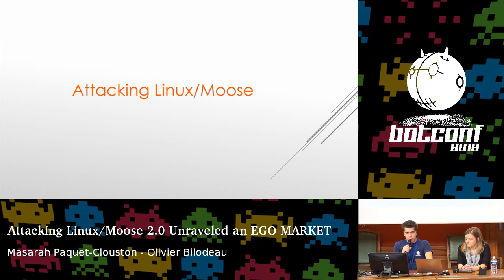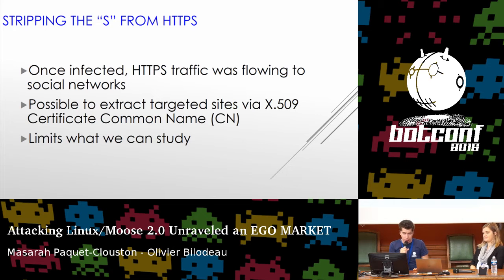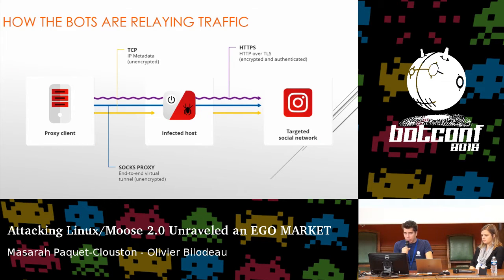Attacking Linux Moose: we wanted to look at the traffic beyond just certificate names, because the CN limited what we could study. At first we tried SSL strip on Instagram traffic since it was initially plain text, but this failed due to a redirection loop — they were always upgrading us to HTTPS. So what we did instead was go full man-in-the-middle and hope that they wouldn't detect us based on certificate errors.